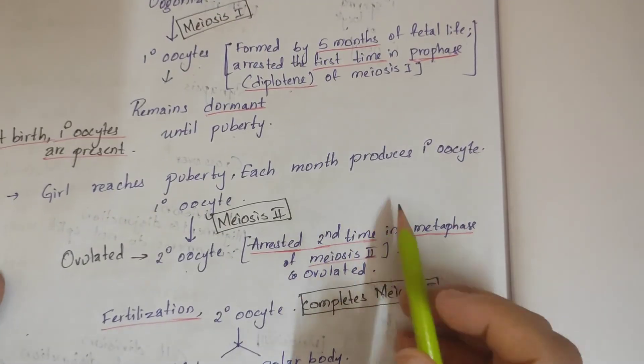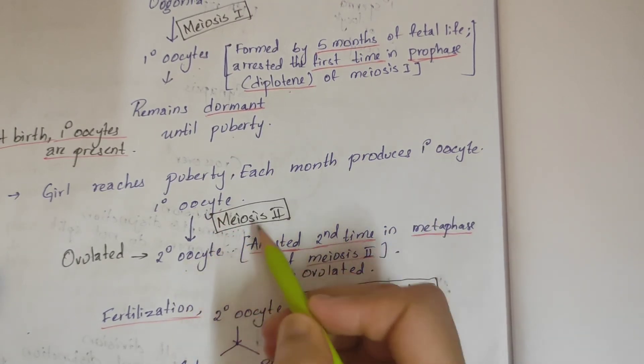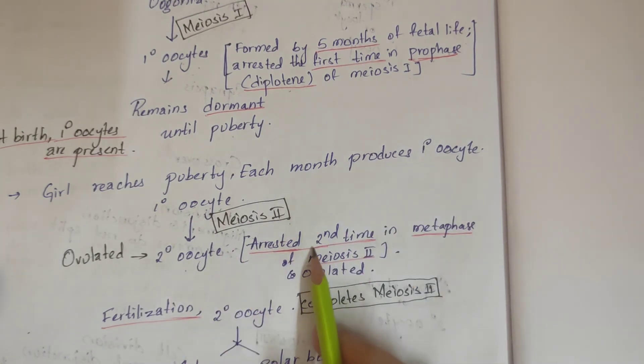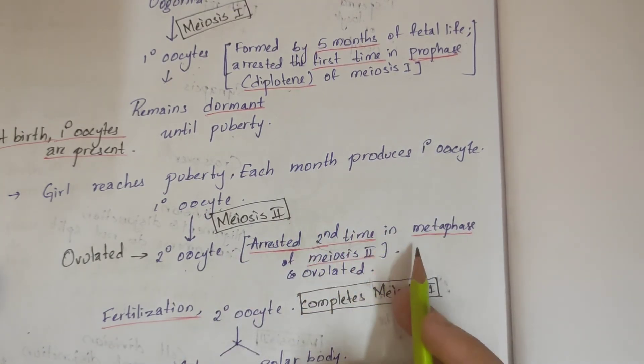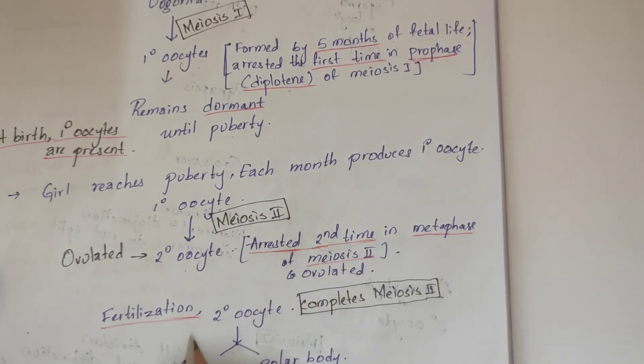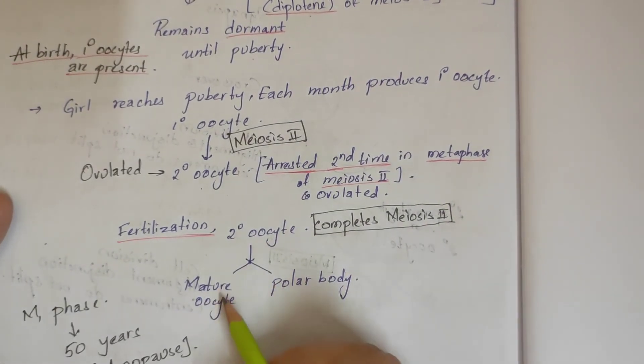When the girl reaches puberty, each month the primary oocyte undergoes meiosis 2 to form the secondary oocyte, which is arrested a second time in the metaphase of meiosis 2 and gets ovulated. If fertilization occurs, the secondary oocyte completes meiosis 2 and forms a mature oocyte and a polar body.